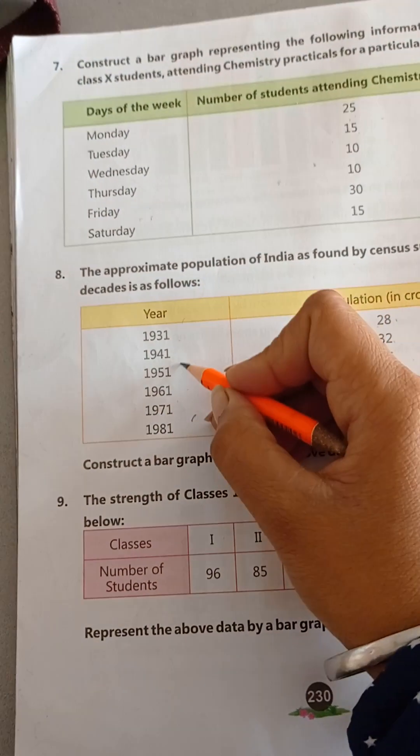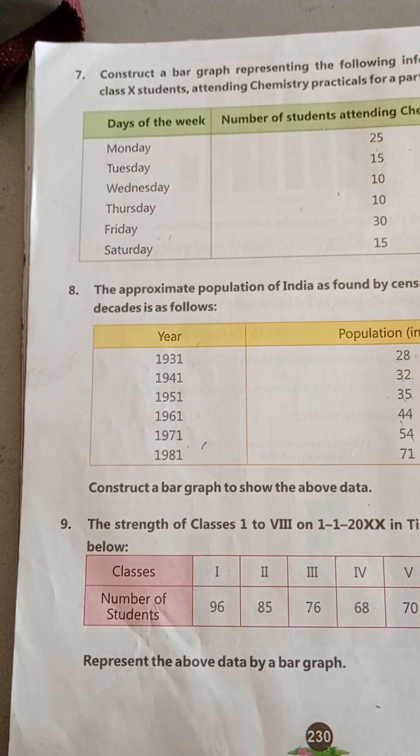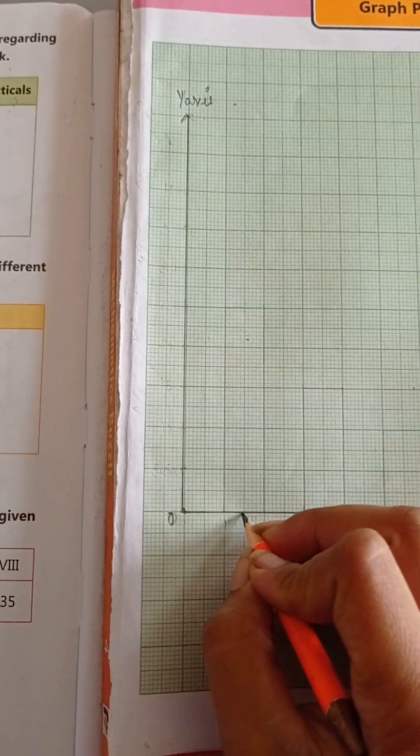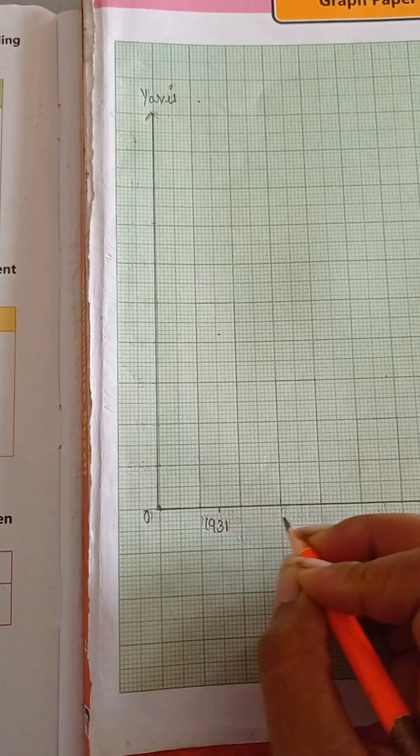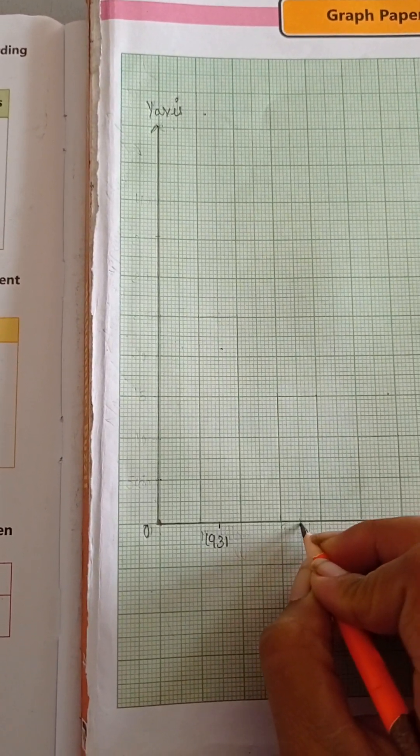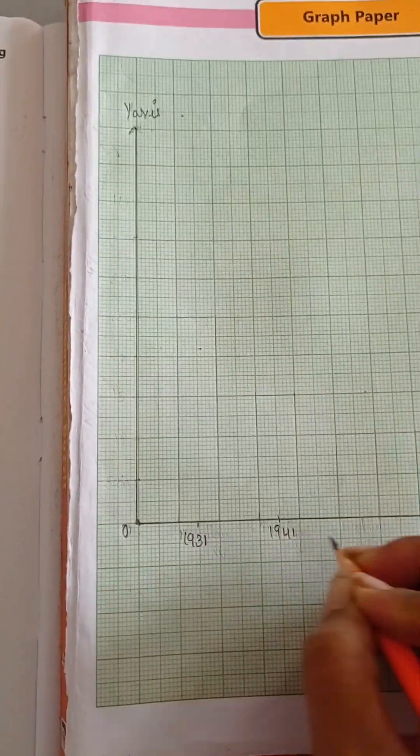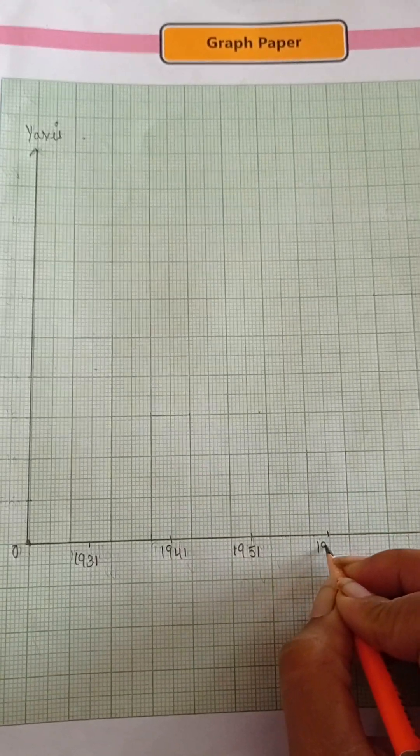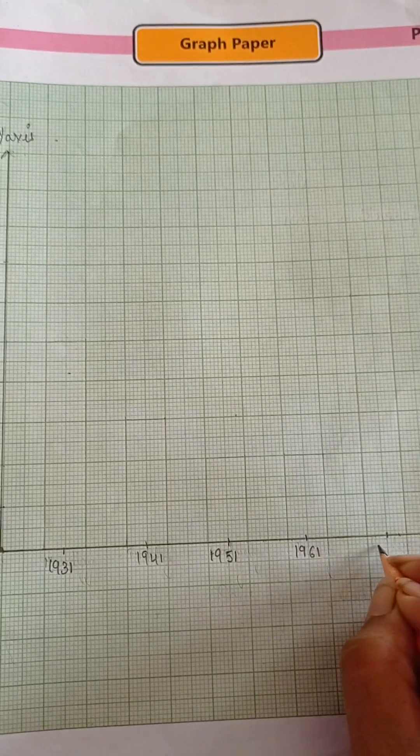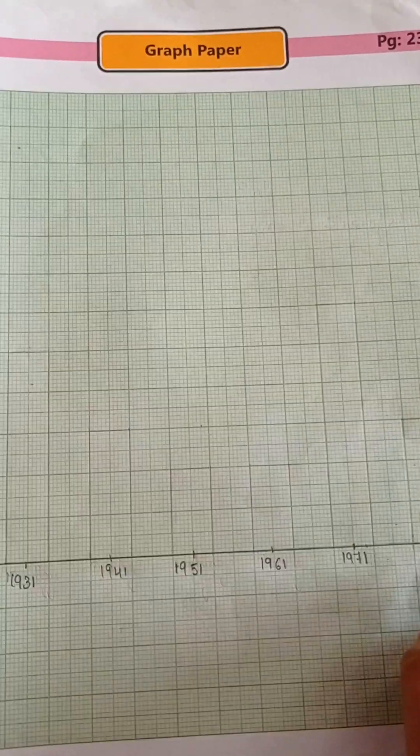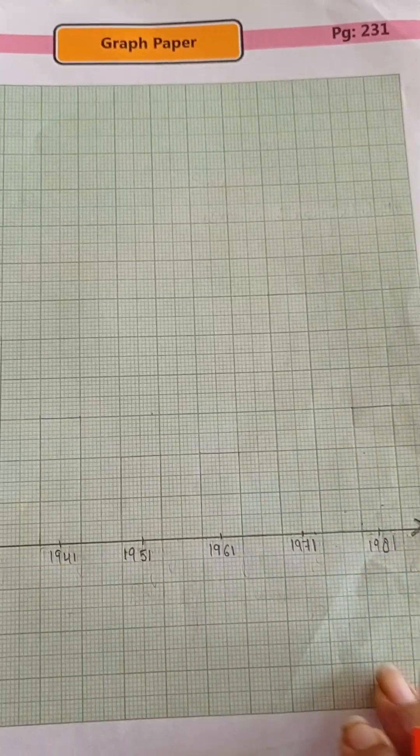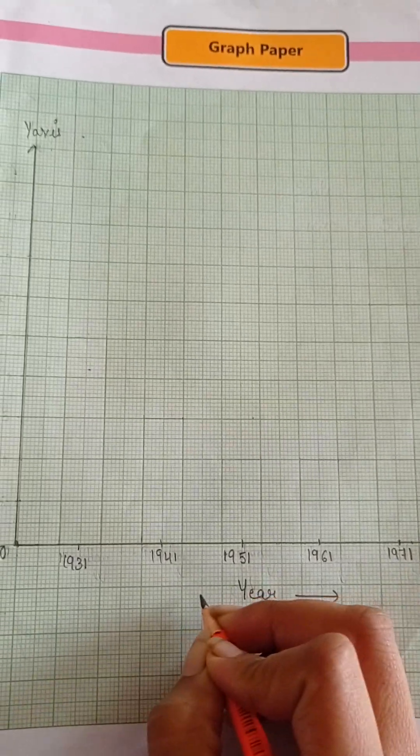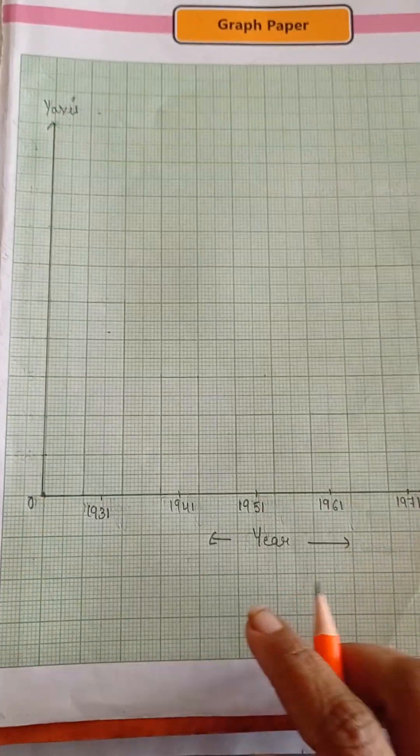Now, mark these different years on the x-axis. First one is 1931. Mark here, it is 1931. Next year is 1941. Another one, 1951. Next year is 1961. Next year is 1971. And next year is 1981. And then mention year over them.